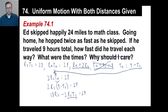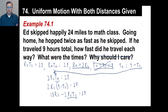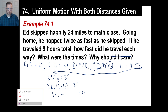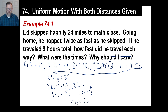R sub S times T sub S — we look up and see that's the same thing as 24. That's the key on these both-distances-given problems. R sub S times T sub S we say is 24, so let's just replace it: two times 24 is 48. So 18 R sub S minus 48 equals 24. That gives us 18 times the rate of skipping equals 72, so the rate of skipping is 72 divided by 18, which is four miles an hour.